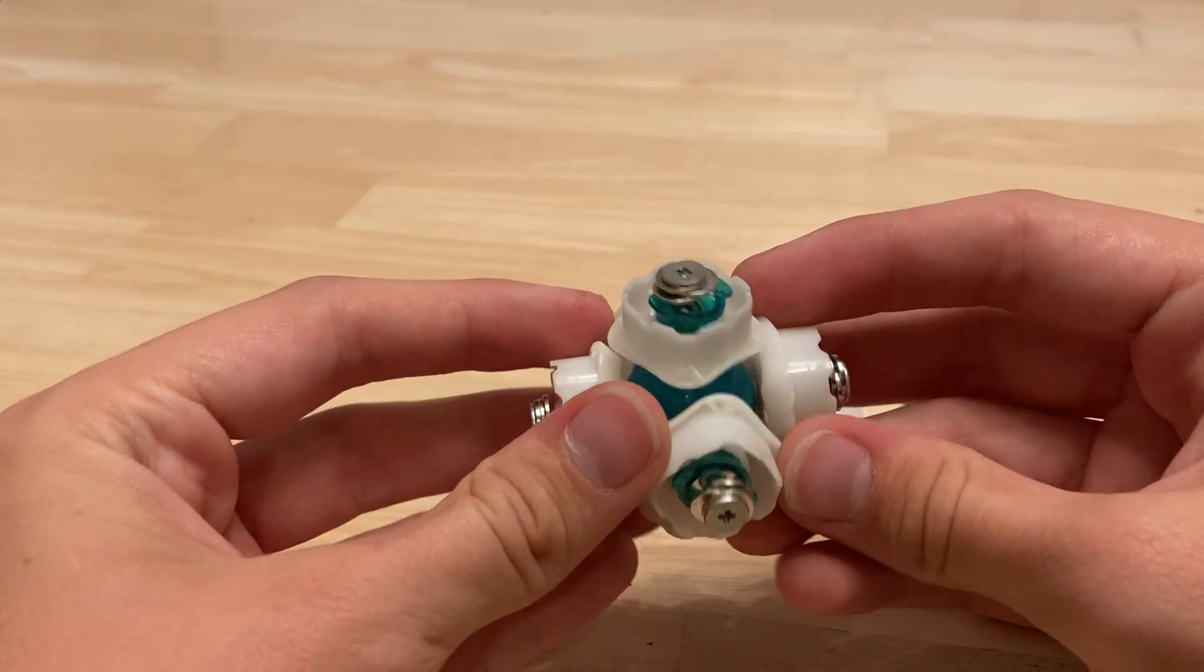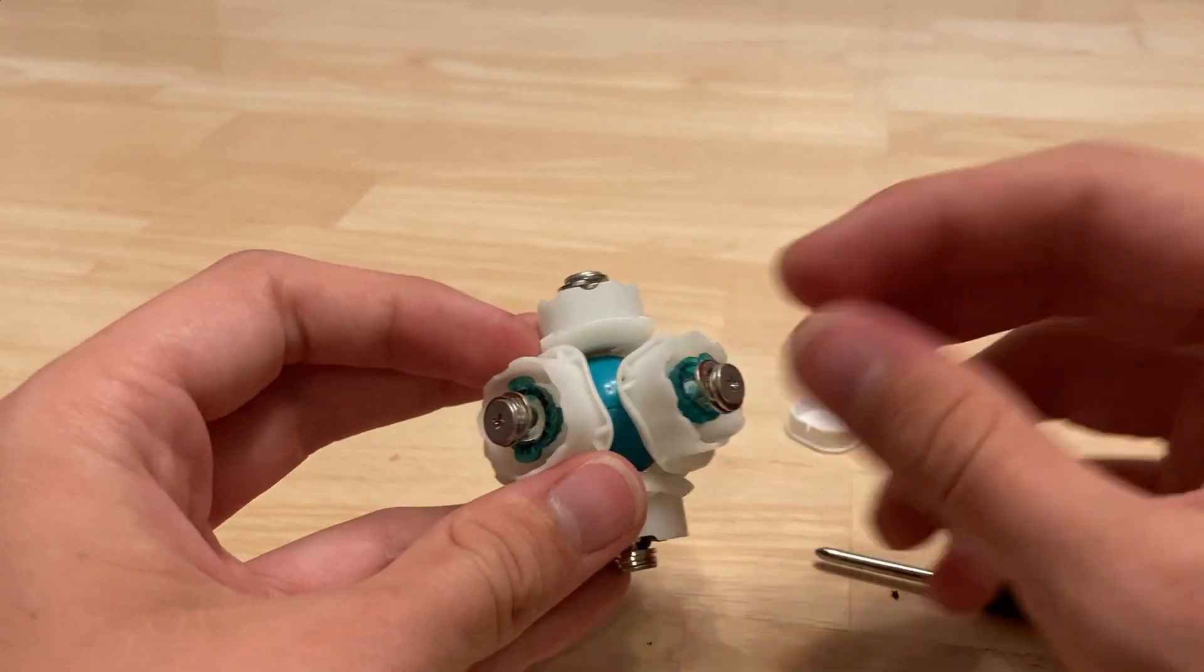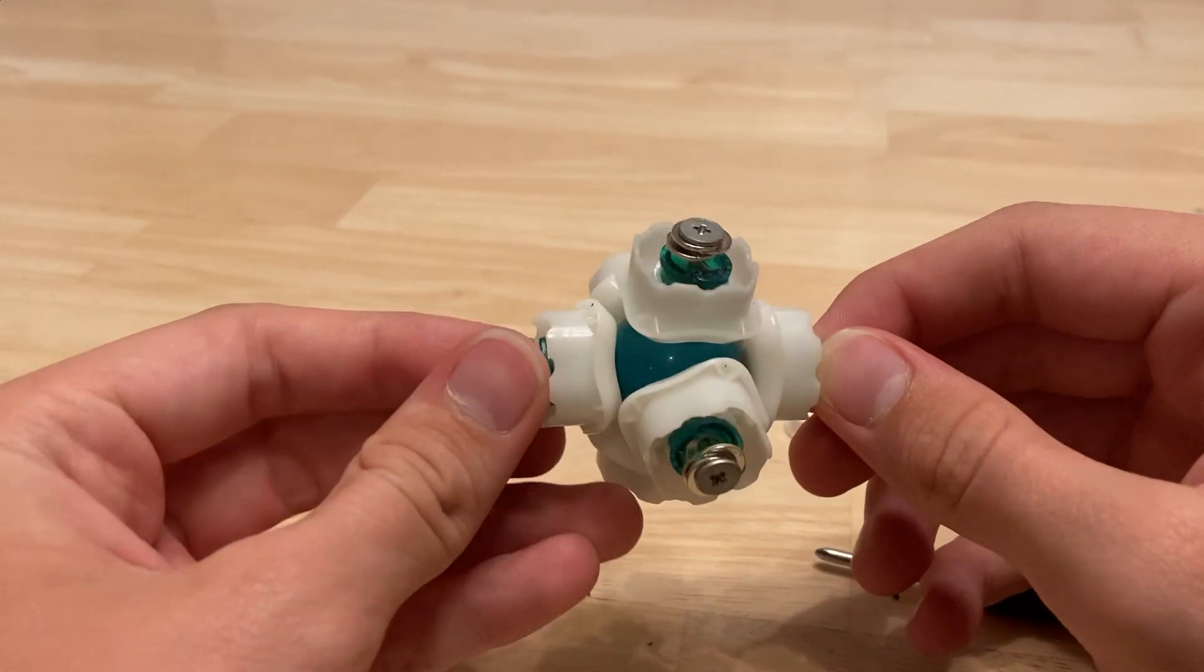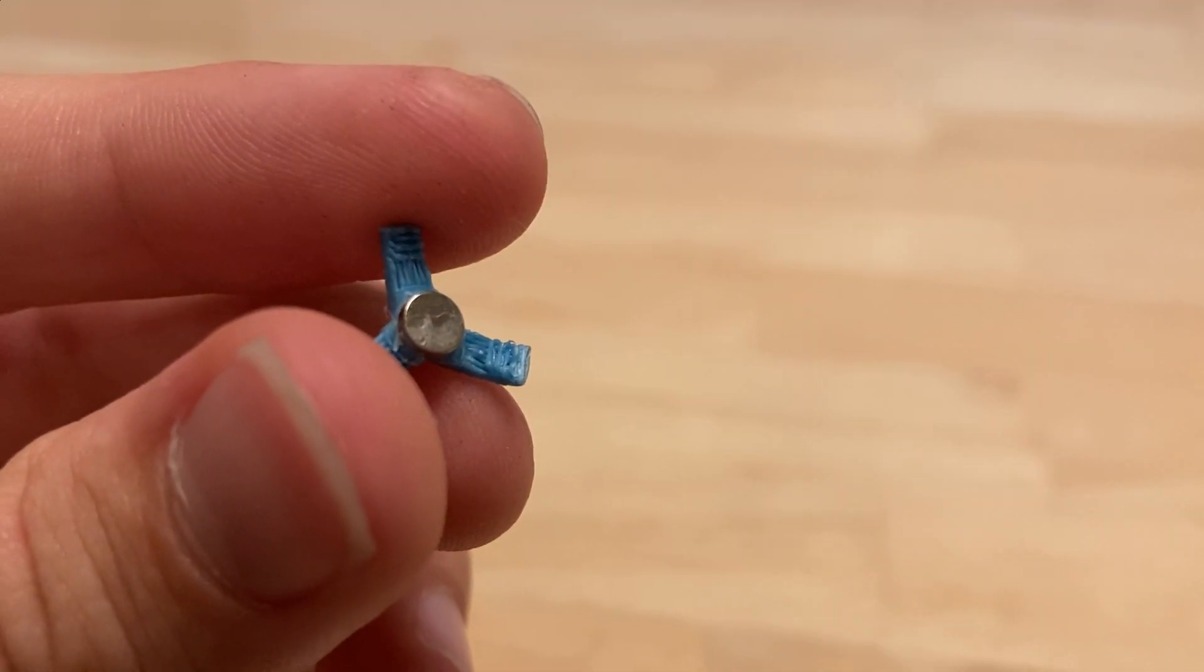Alright, that should be all the screwing you have to do. Anything else would be like fine tuning the tensions once you put the whole thing together. Once you're done putting your core together, it should look like this. And then you'll want to move on to these.